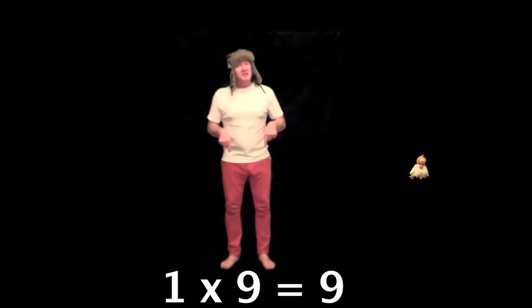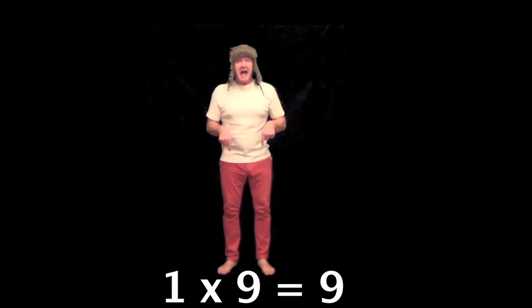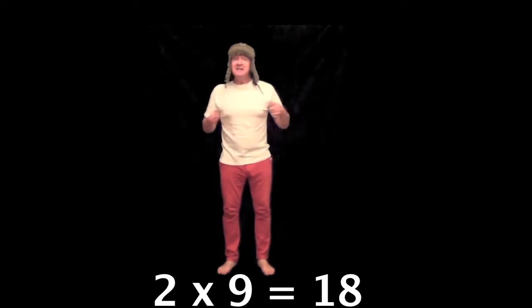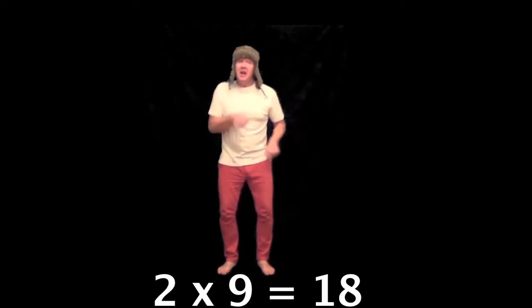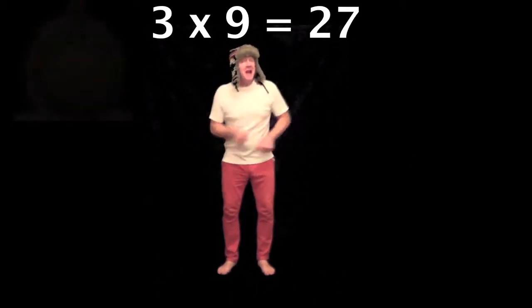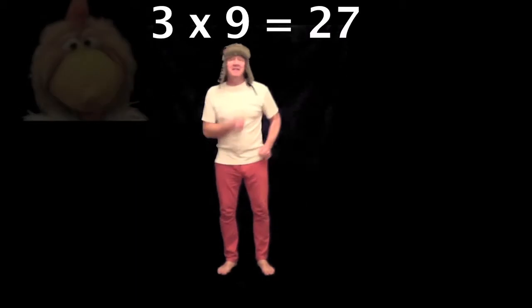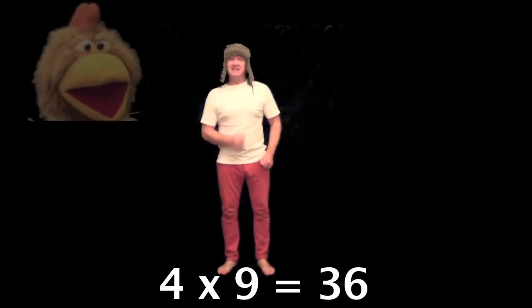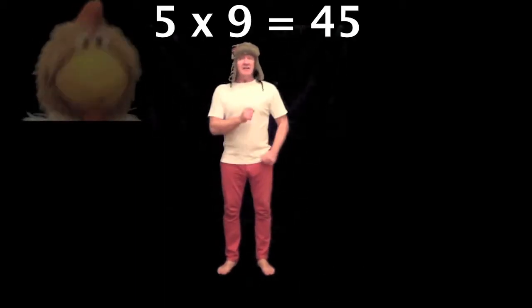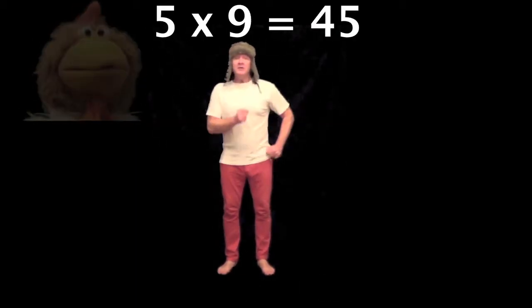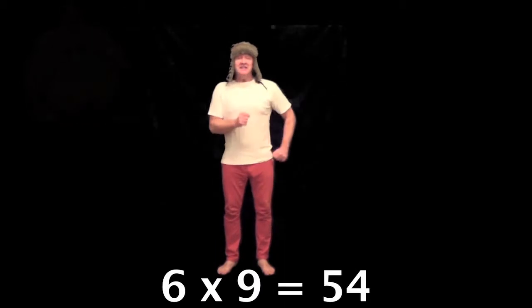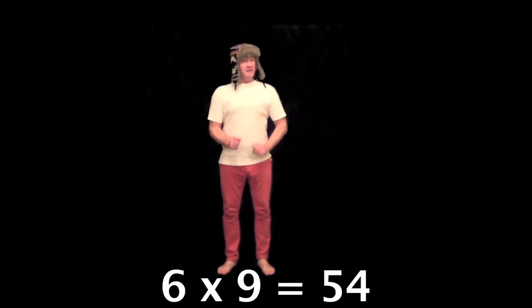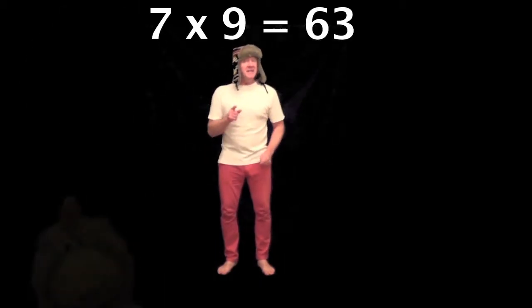1 times 9 is 9, 2 times 9 is 18, 3 times 9 is 27, 4 times 9 is 36, 5 times 9 is 45, 6 times 9 is 54,